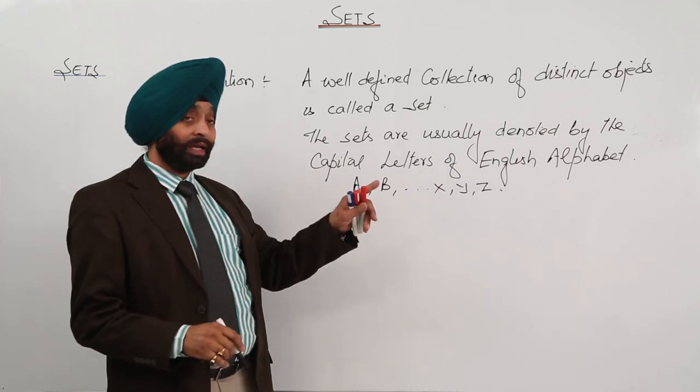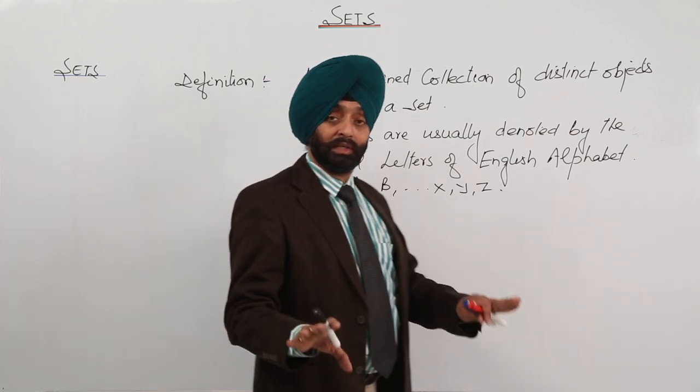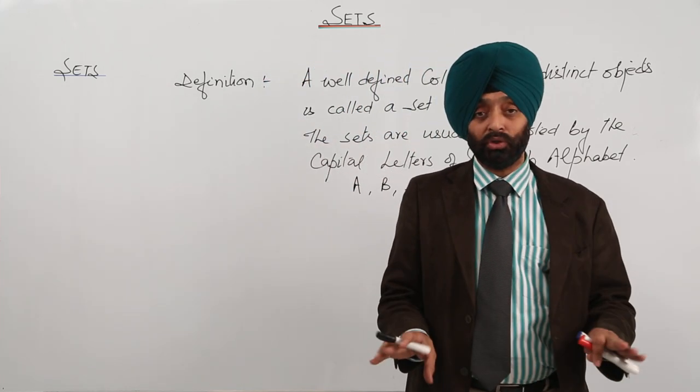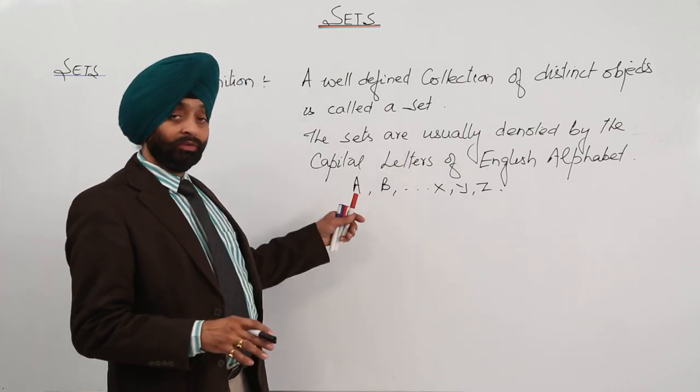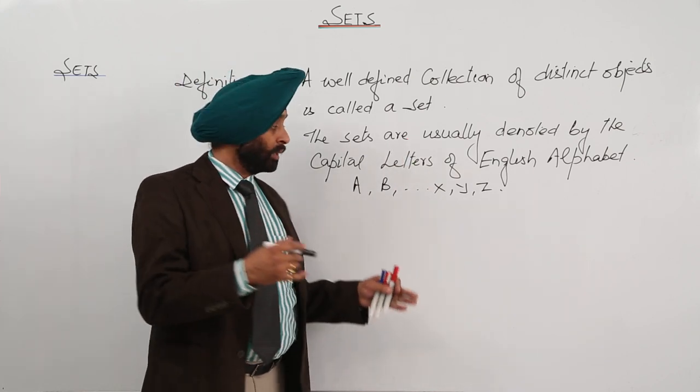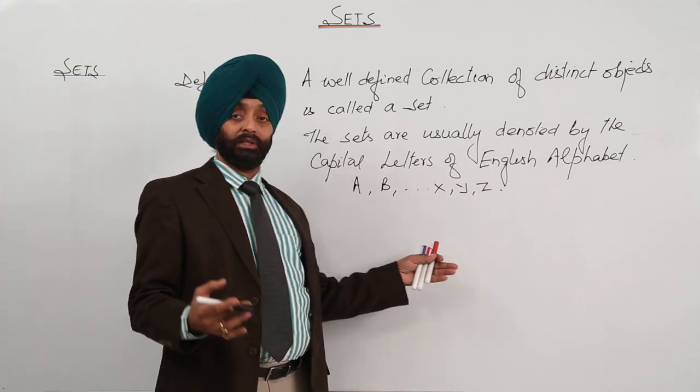But earlier when I asked you, five brilliant students in your class, that was not a set. Now, is it clear? Set is very much clear to you. So, this was all about a set, the definition I have written, and I have just told you how we are going to denote a set by the English alphabets in capital.